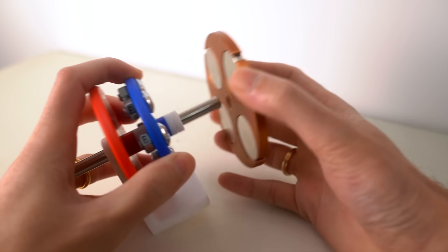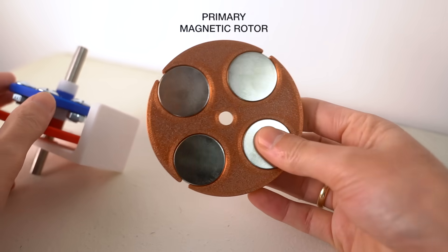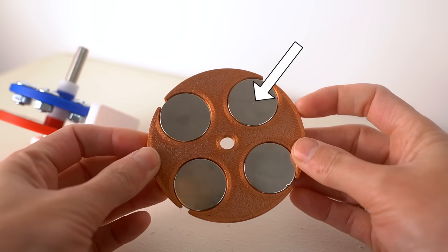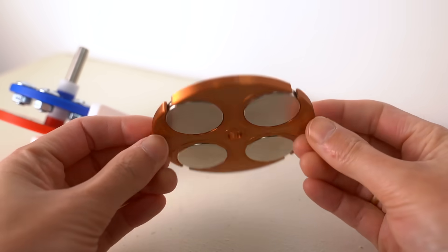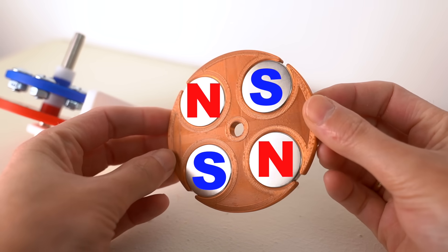And it has three major components. This is the primary magnetic rotor. It has four powerful neodymium magnets, and they're placed in alternating polarity.